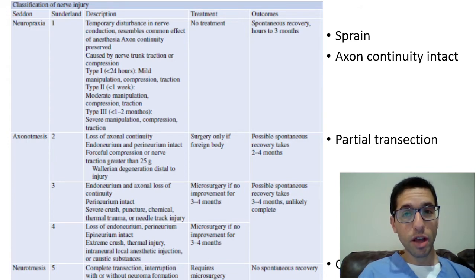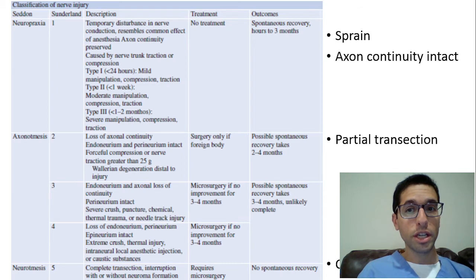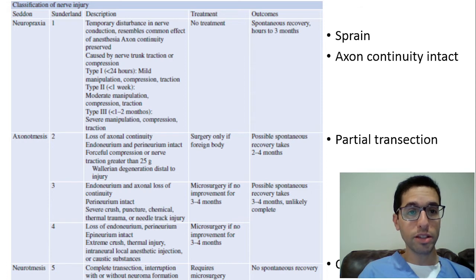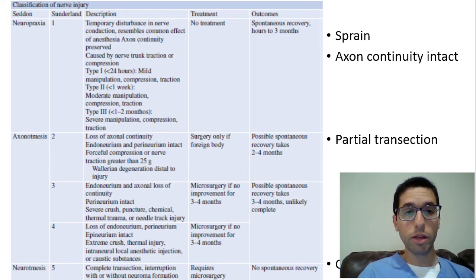For classification systems, there's Seddon and Sunderland. Seddon has three classifications: neuropraxia, axonotmesis, and neurotmesis. Neuropraxia is the simplest — I like to think of it as a sprain. There was no axon continuity disruption; the axon is completely intact. The only thing that happened was severe manipulation or compression essentially sprained the nerve. No treatment is required, and we do expect spontaneous full recovery over a few weeks or months.